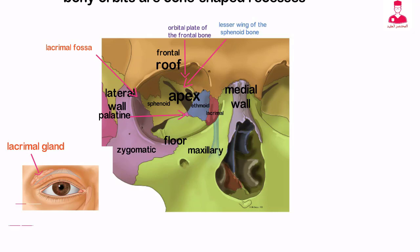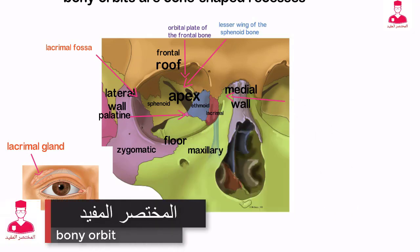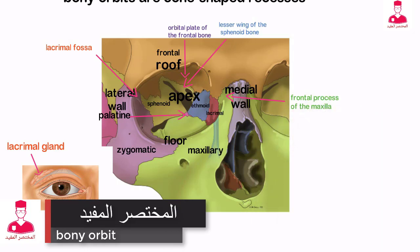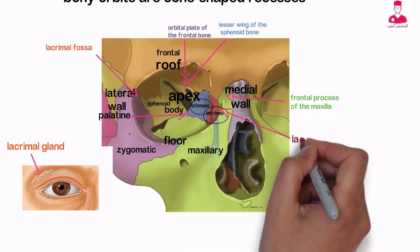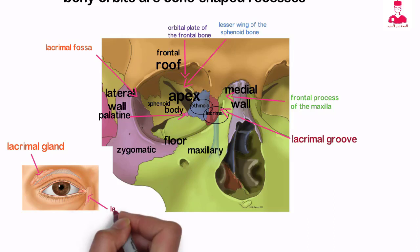The medial wall is exceedingly thin and is formed by a portion of the frontal process of the maxilla, the lacrimal bone, the ethmoid bone, and the body of the sphenoid bone. On the interior surface of the medial wall is the lacrimal groove for the lacrimal sac.